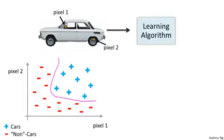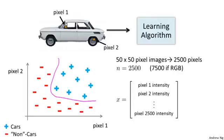What is the dimension of the feature space? Suppose we were to use just 50 by 50 pixel images. That is, suppose our images were pretty small ones, just 50 pixels on the side. Then we would have 2,500 pixels. And so the dimension of our feature size will be n equals 2,500, where our feature vector x is a list of all the pixel intensities. The pixel brightness of pixel one, the brightness of pixel two, and so on, down to the pixel brightness of the last pixel. Where, in a typical computer representation, each of these may be values between say 0 to 255, if it gives us maybe the grayscale value. So we have n equals 2,500. And that's if we were using grayscale images. If we were using RGB images with separate red, green, and blue values, we'd have n equals 7,500.